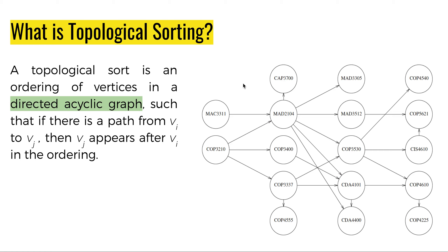The diagram on the right side is a course prerequisite structure diagram of the University of Miami. Here there are several vertices and each vertex has a number inside it. That number represents the course code of the courses offered by the University. The edges represent a prerequisite. Suppose that if MAD 3305 needs to be studied then a student has to fulfill the prerequisite of studying MAD 2104.